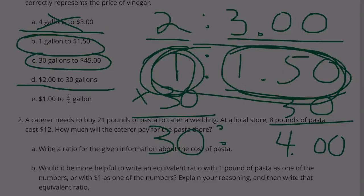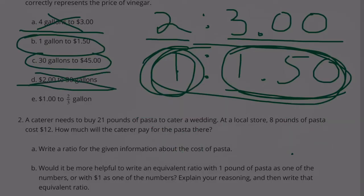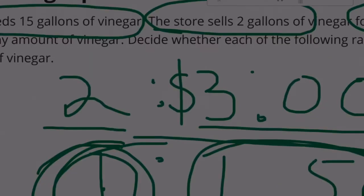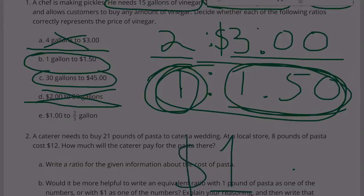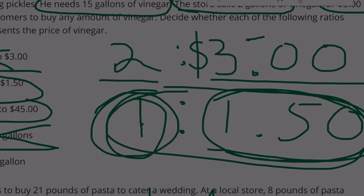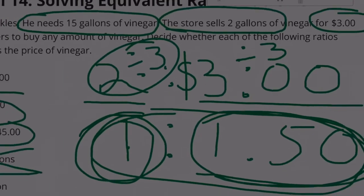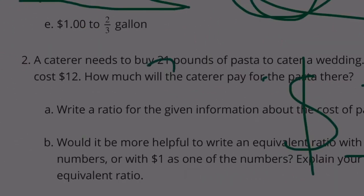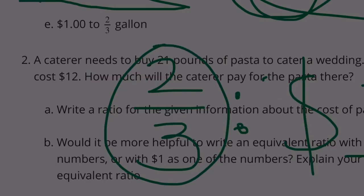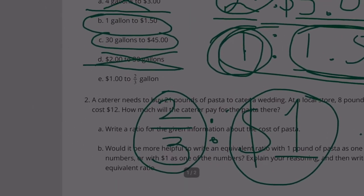Option E: $1.00 to 2-thirds gallon. In order to change $3.00 to $1.00, we'd have to divide by 3. So let's divide 2 by 3. Another way to do 2 divided by 3 would be 2 over 3. So 2-thirds gallon is $1.00.